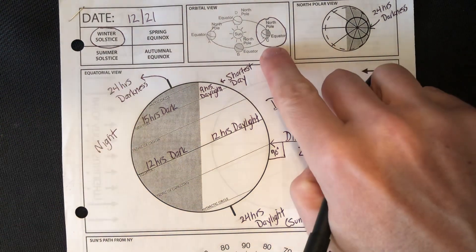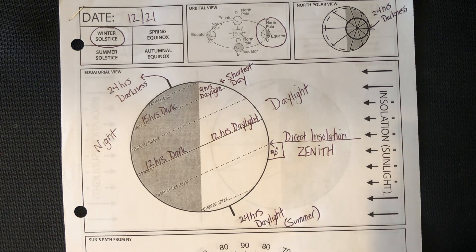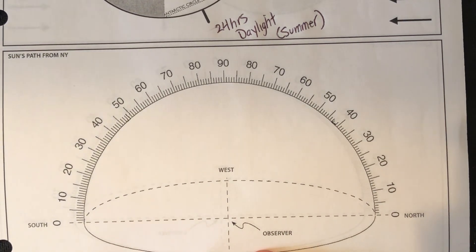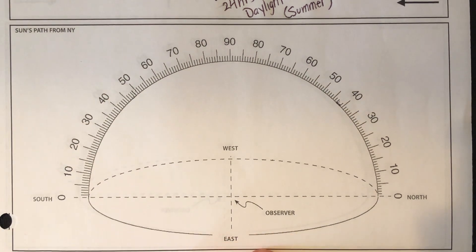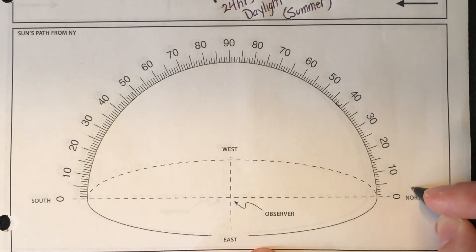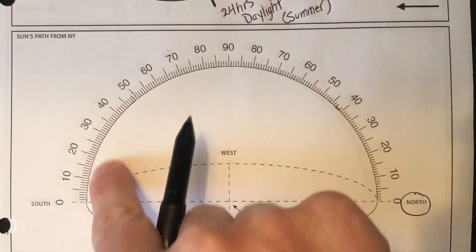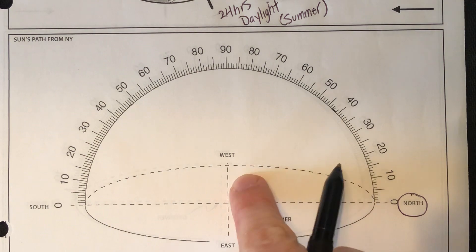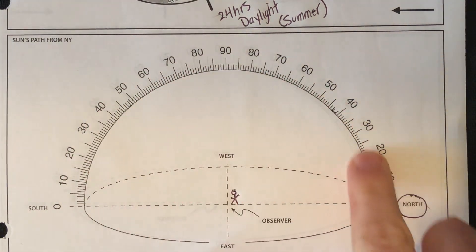December 21, winter solstice: the orbital view, the North Pole point of view, and the equatorial point of view — all of those are very important. Now let's work our way down to the sun's path. You have to know how to draw these — they're really important and appear on the Regents exam all the time. The arced dome represents the sky, and the flat oval area represents a field or any flat area. An observer on the field looks up into the sky to identify the angle to objects.